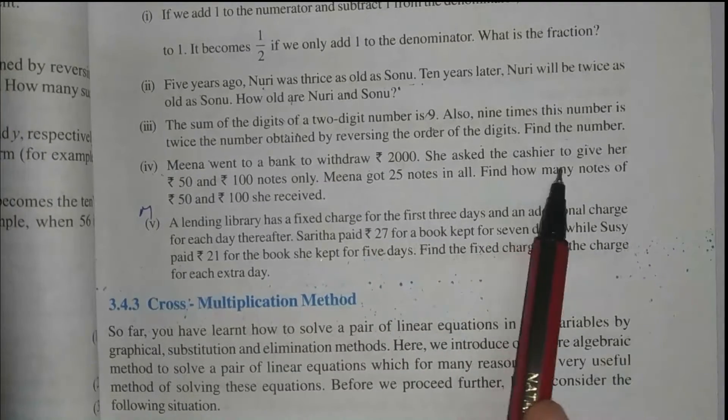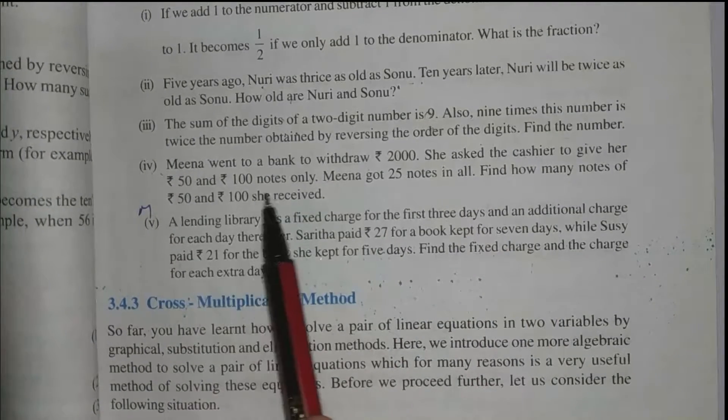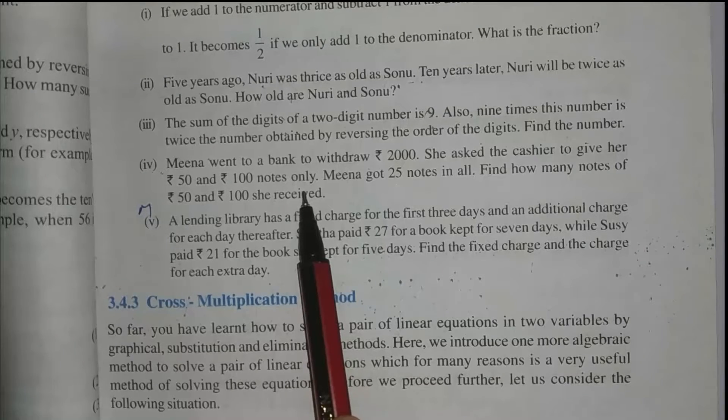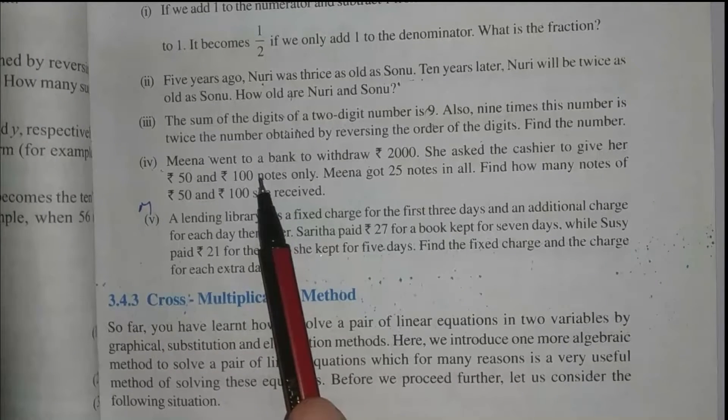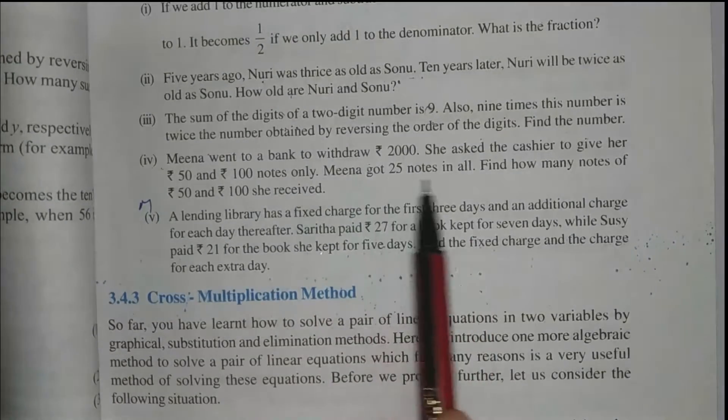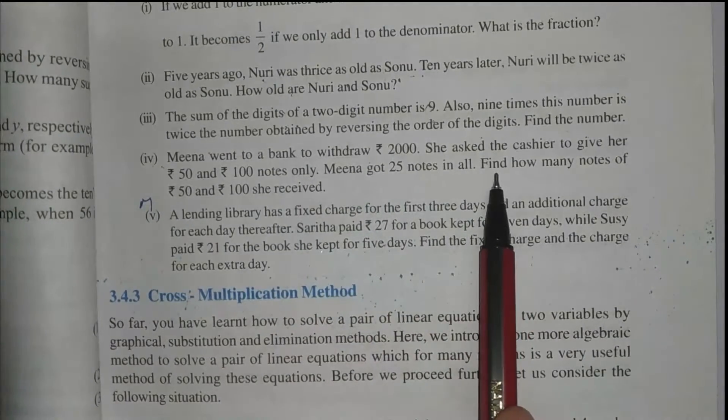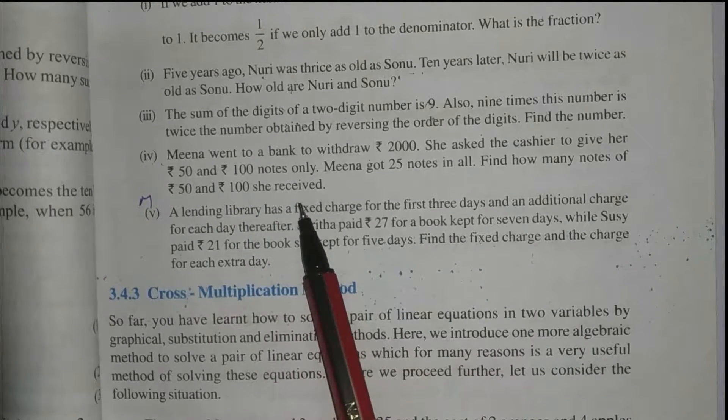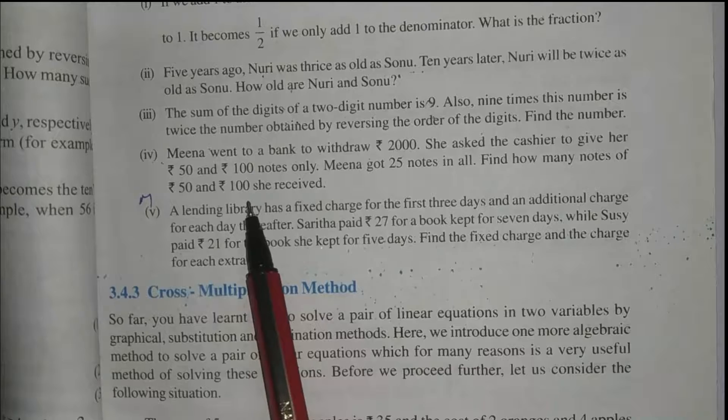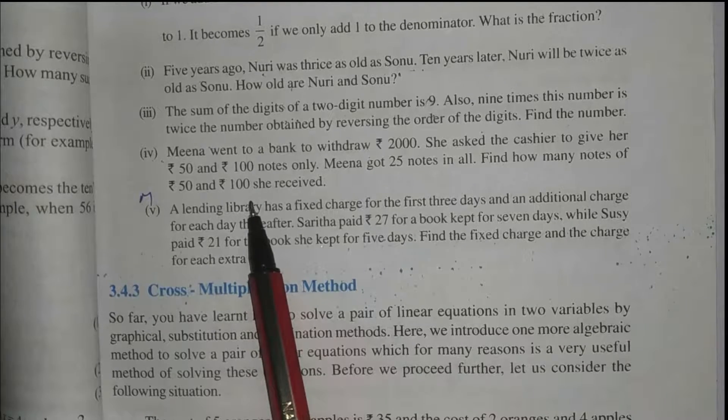She asked the cashier to give her rupees 50 and rupees 100 notes only. So she said to the cashier to give her rupees 50 and rupees 100 notes only. Meena got 25 notes in all. So total kitne notes mili? 25. Find how many notes of rupees 50 and rupees 100 she received. Very interesting question.